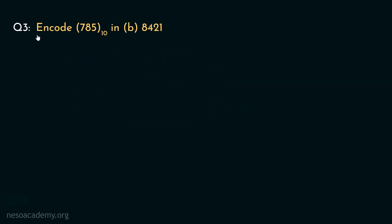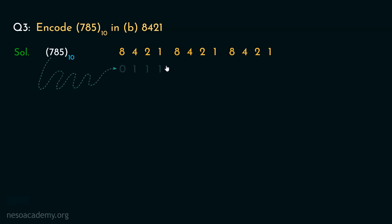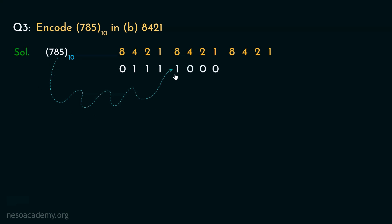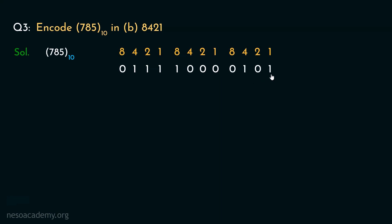Let's now move on to encoding the value 785 in 8421. Now 785 has 3 different digits. Following the rule of 8421, we will need 3 different segments to encode each of the digits. If we consider 7, in 8421 the encoding of 7 is 0111, because 4 plus 2 is 6 and 6 plus 1 is eventually 7. Coming to 8, the encoding of that is 1000 because 1 is placed underneath the place value 8. Now for 5, the encoding will be 0101. Ones are placed underneath 4 and 1, so 4 plus 1 is 5. So this is how the decimal value 785 can be encoded in 8421.